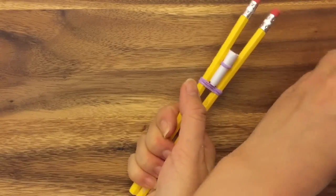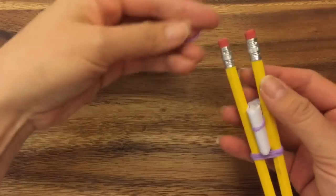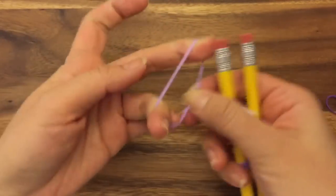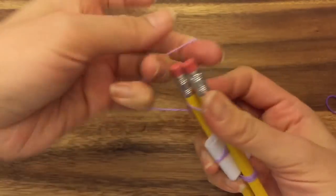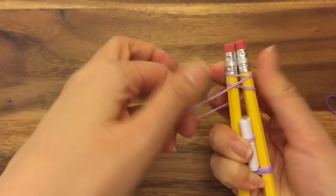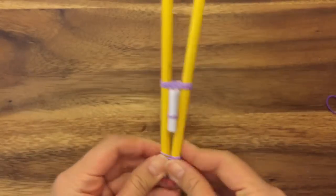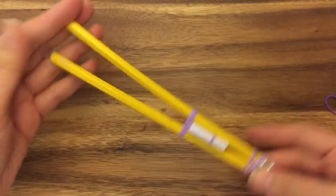Then I'm going to take two more rubber bands and then wrap this around three times. I'm actually going to do four because my rubber bands are a little looser. And there you go.